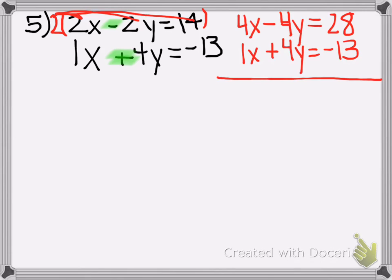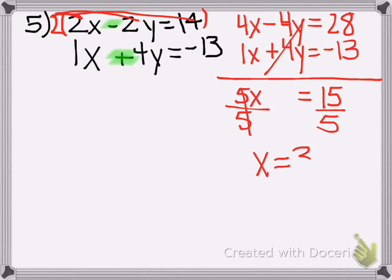And you just add in columns like the previous video. So 4x and 1x is 5x, the y's cancel, equals 28 plus negative 13 is 15. And then you divide by 5. So the x value is 3.